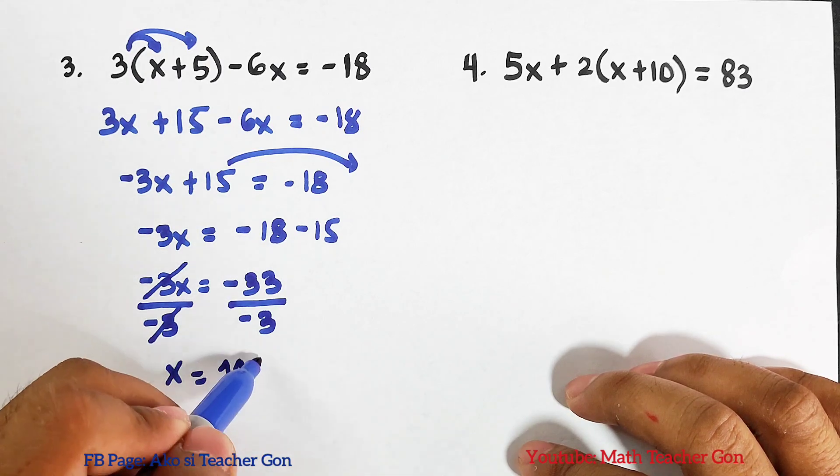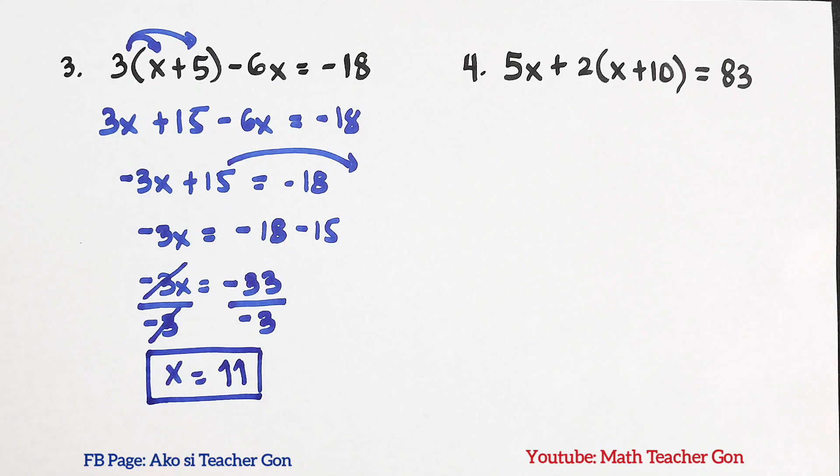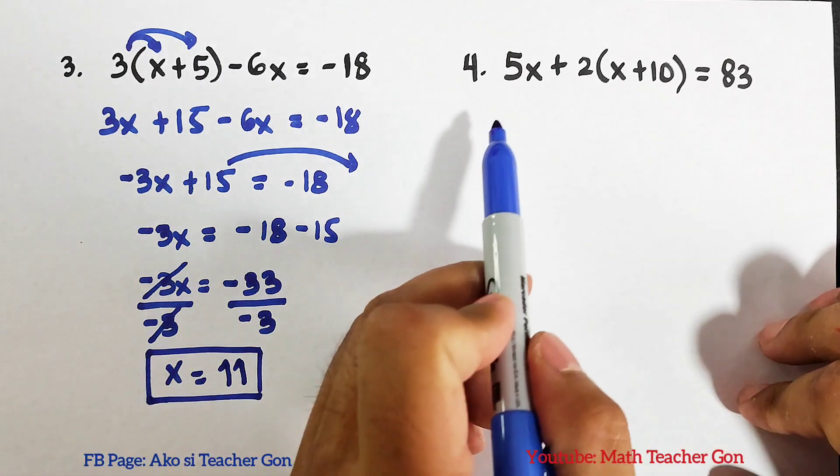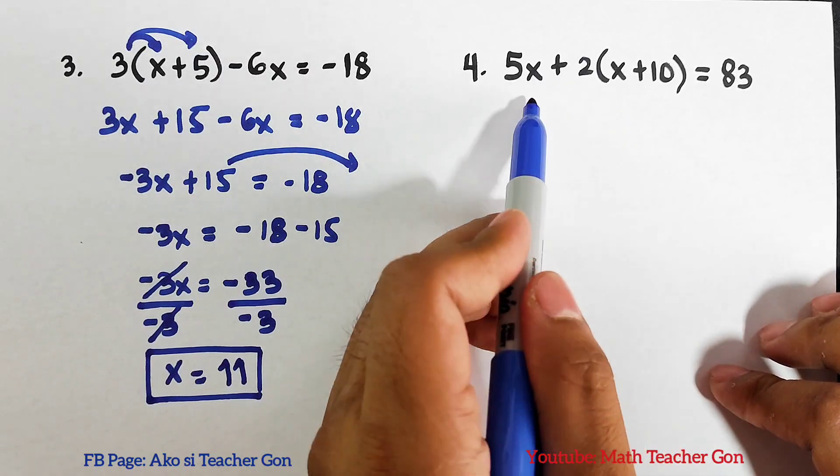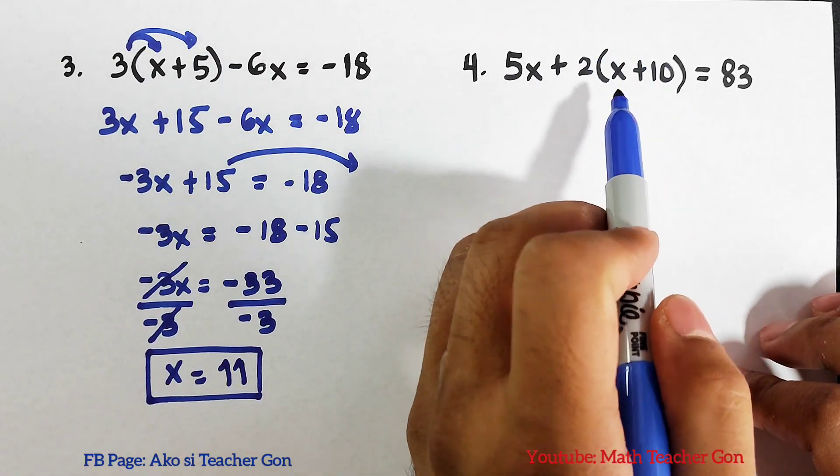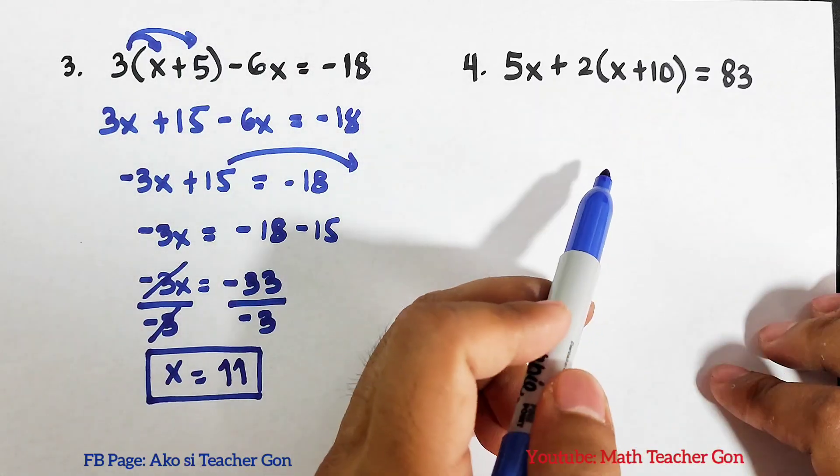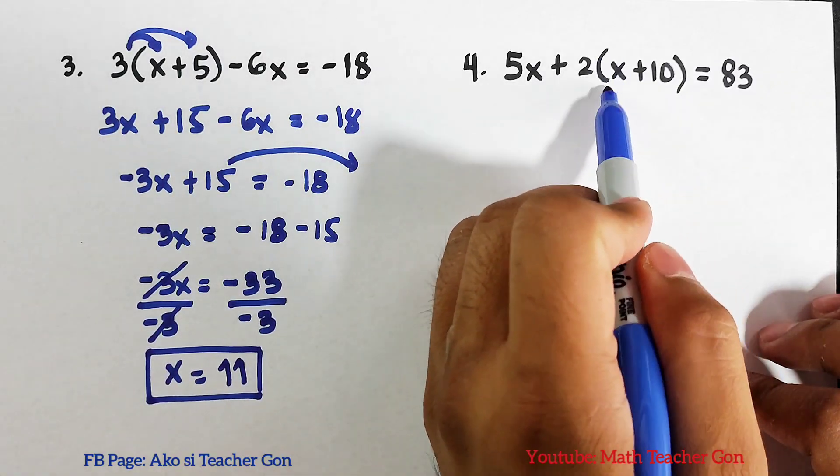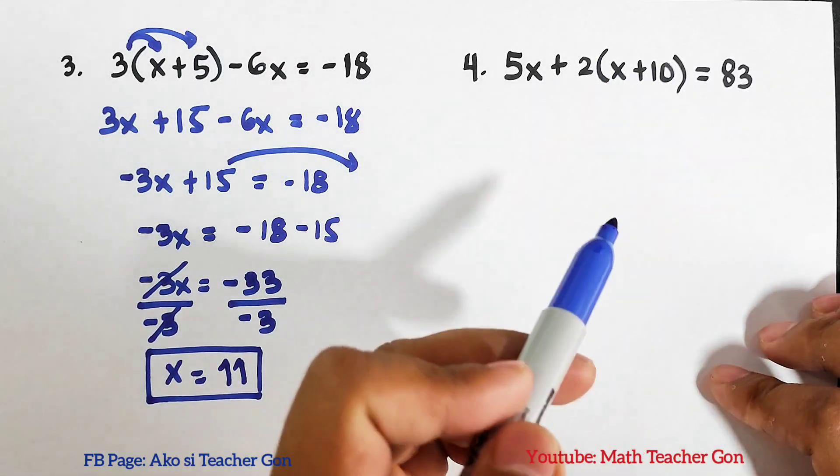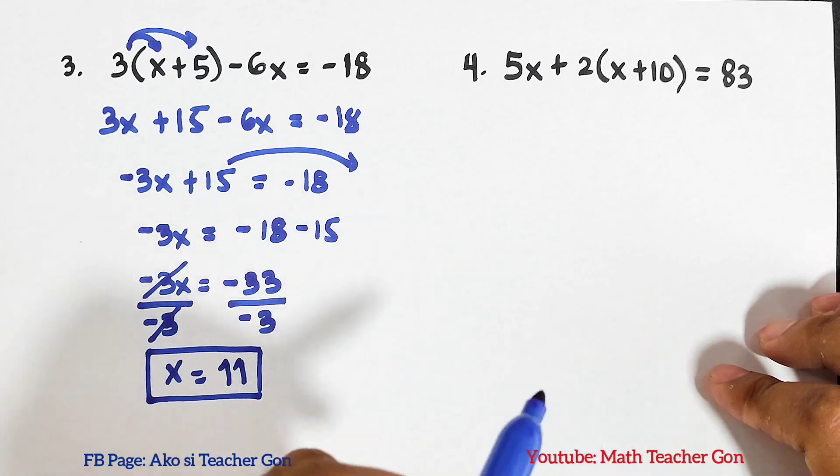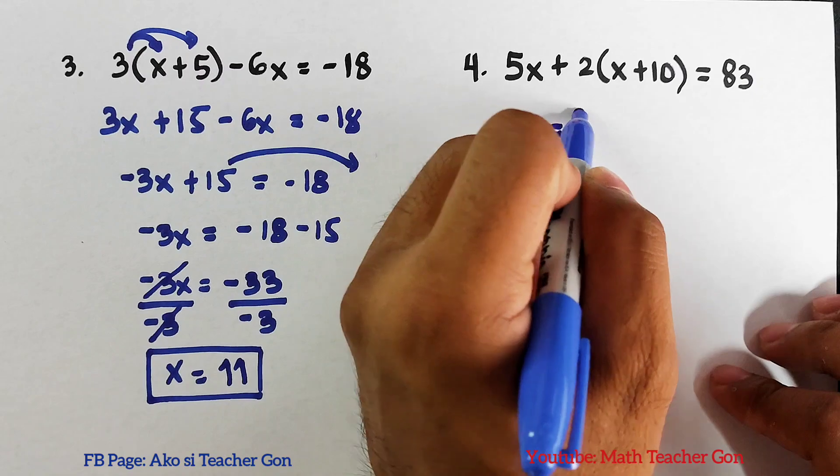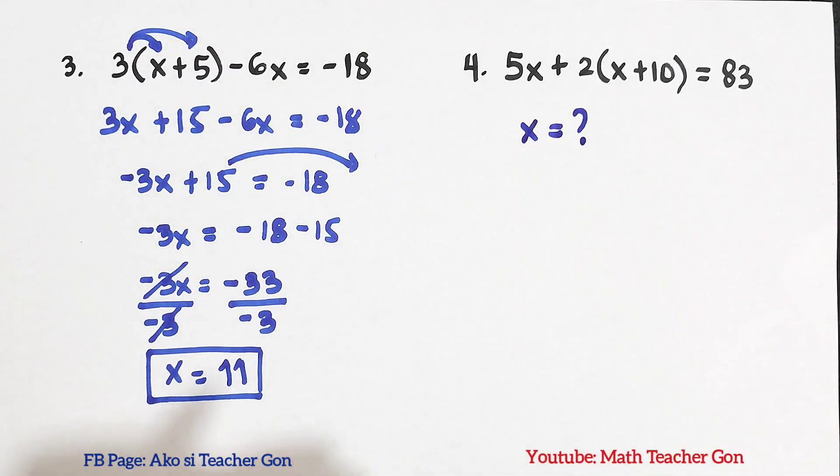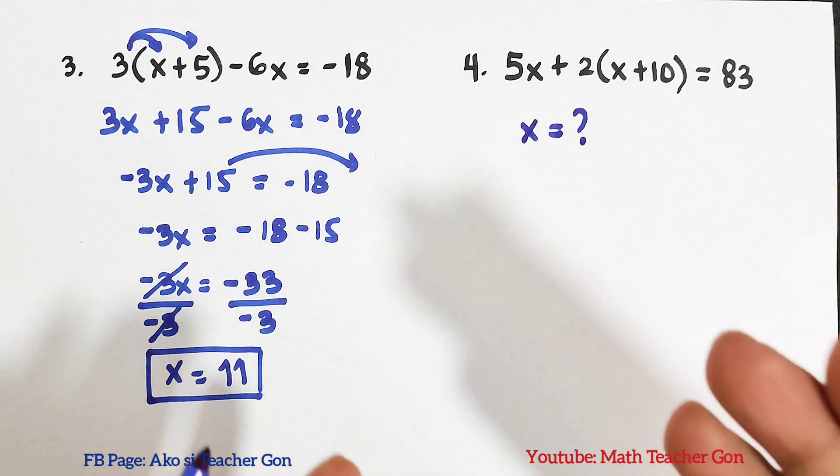So guys, I hope you learned something from this video. And as part of our routine, I want you to try and solve for the value of x given this equation: 5x + 2(x + 10) = 83. Remember, you have this grouping symbol, it simply means that you need to use the distributive property. What is the value of x? You can comment down below about your solution or what is the real value of x for this equation.